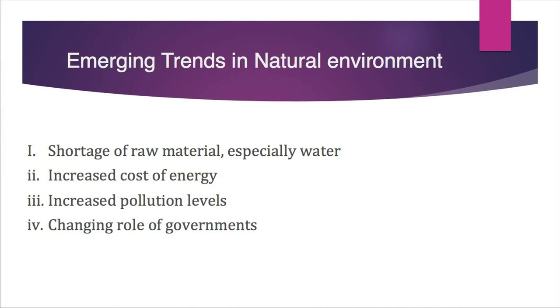These are very threatening issues for our society and we need to think about improving the natural environment. Discussing the emerging trends in natural environment: the first is shortage of raw materials, specially water. Mankind is using raw materials more and more as population grows faster, but raw materials are not available in infinite quantity and have specific limitations.